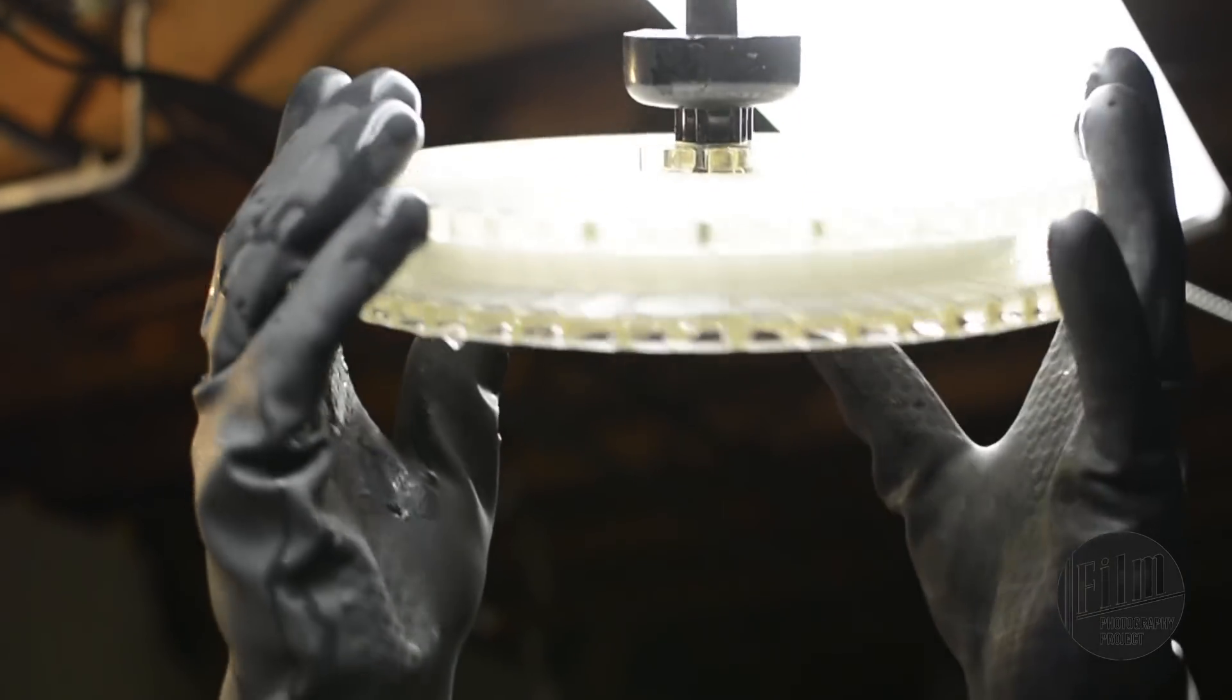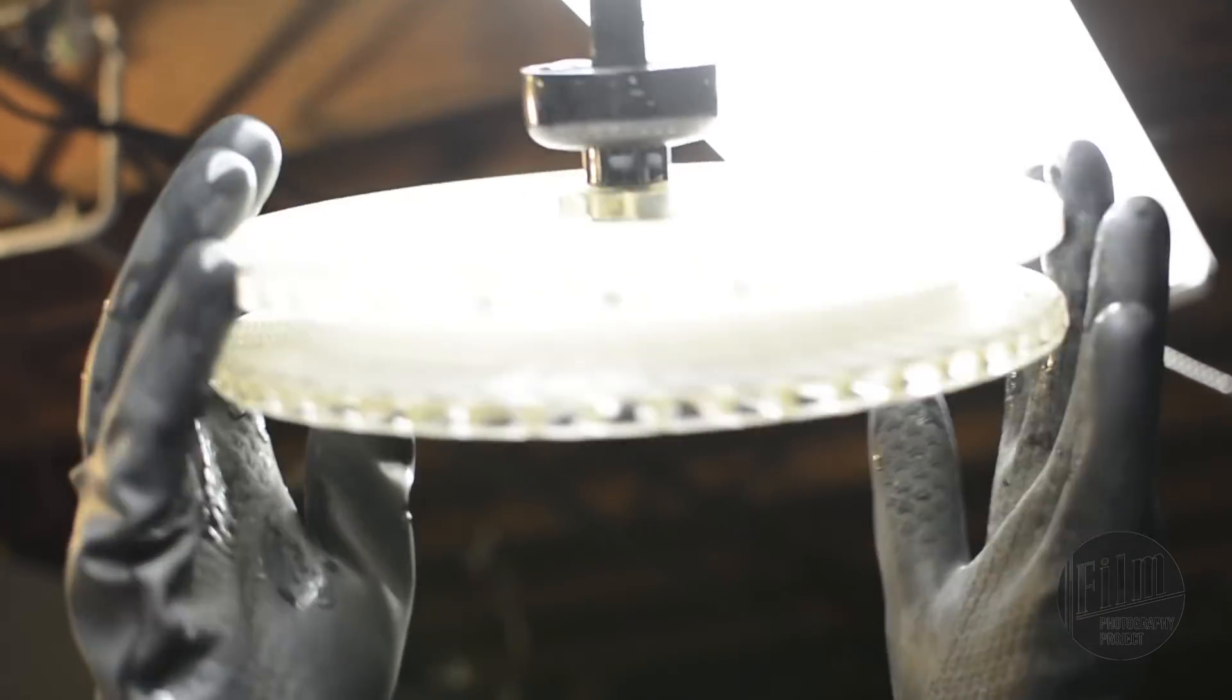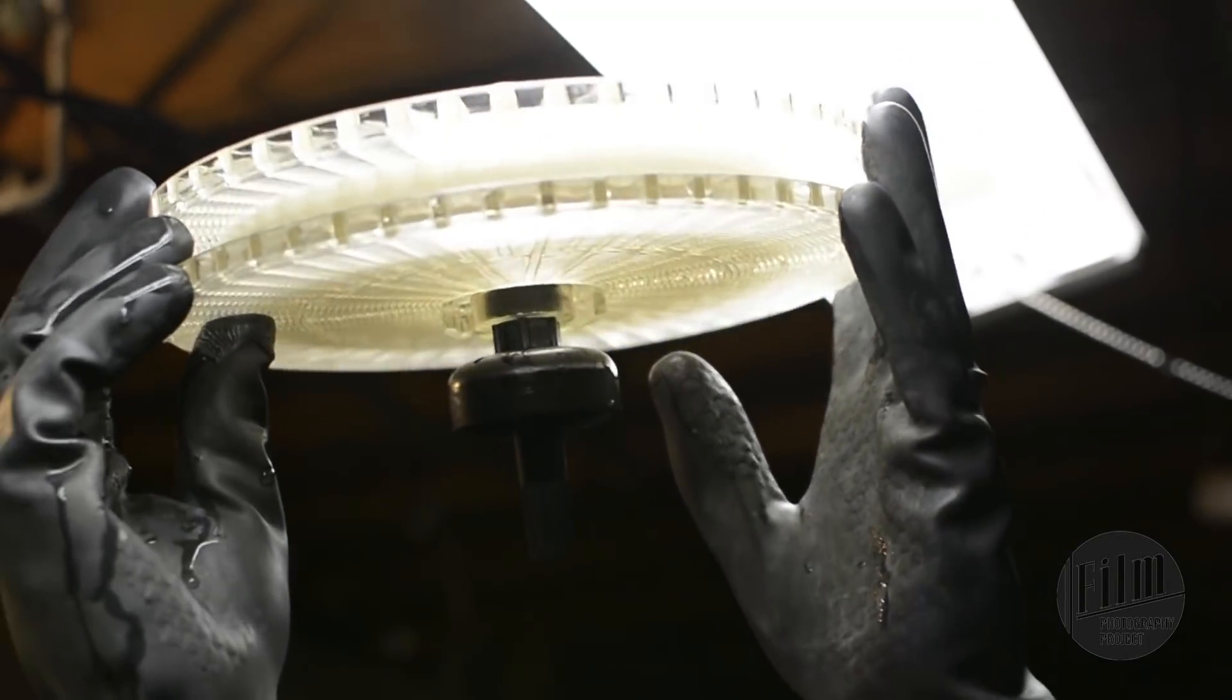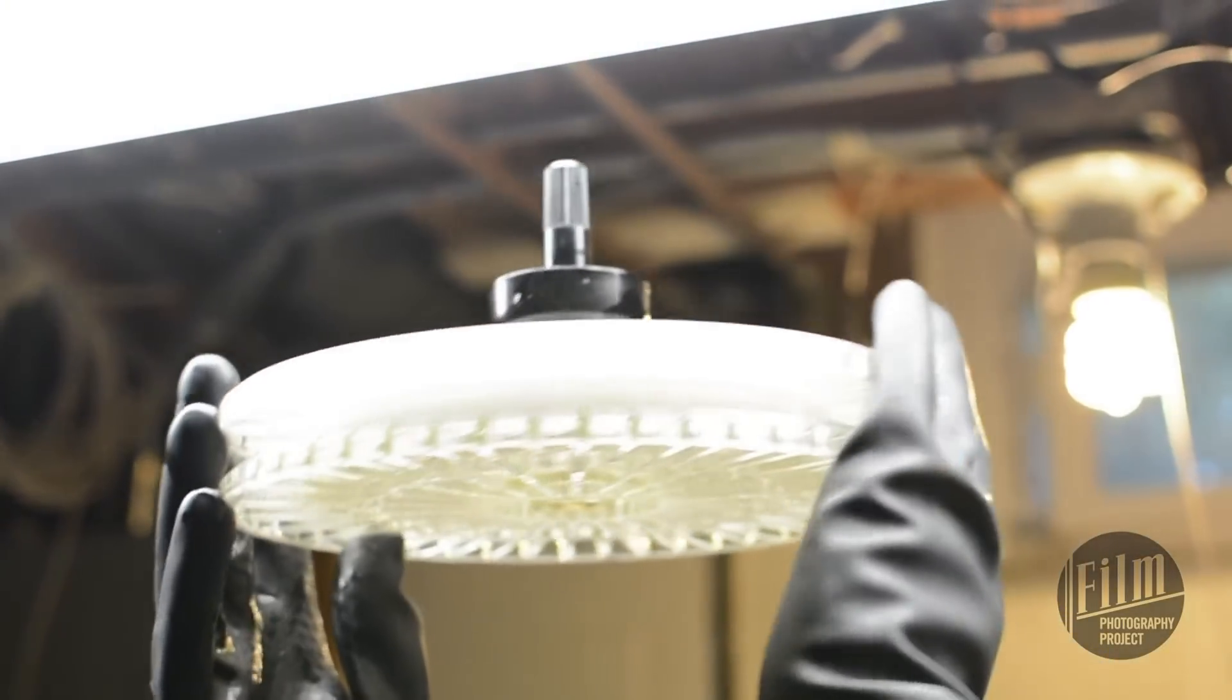Drain the clearing bath into its container. Now comes rear exposure. This part of the process turns the film into a positive image. Hold the reel in front of an electric light for 2-3 minutes. Turn the reel a few times to make sure the film is evenly exposed.